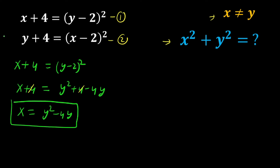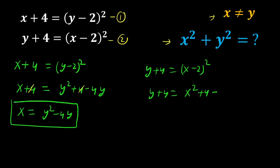Equation number two is y plus 4 equals (x minus 2) squared. Expanding: y plus 4 equals x squared plus 4 minus 4x. The 4s cancel out, so y equals x squared minus 4x.